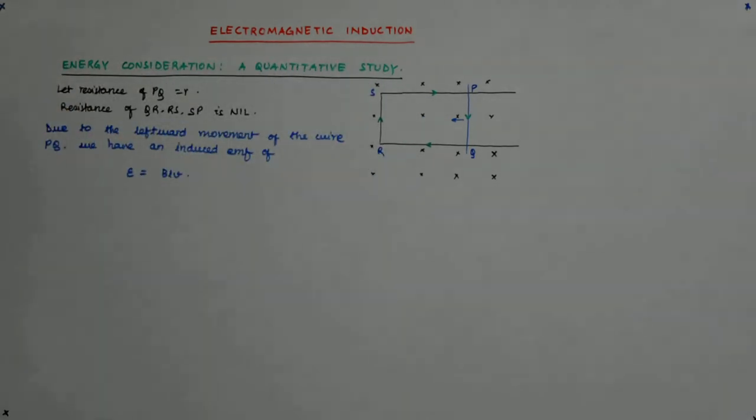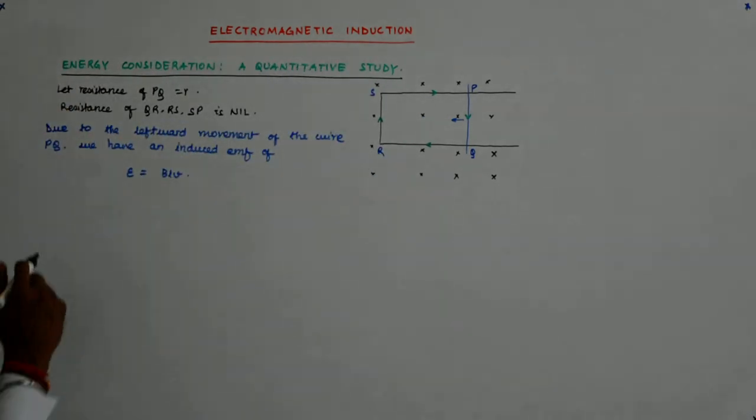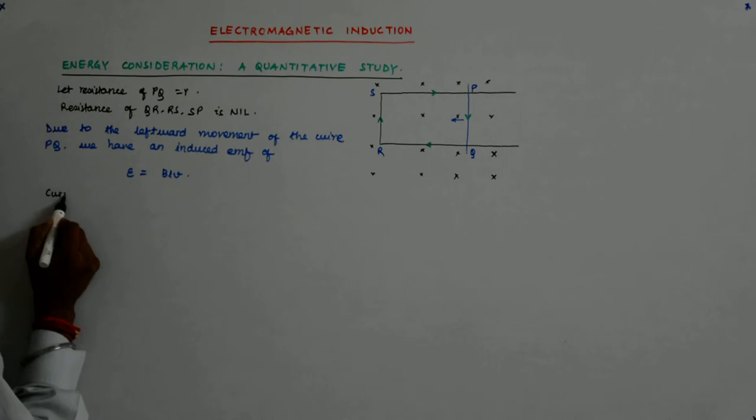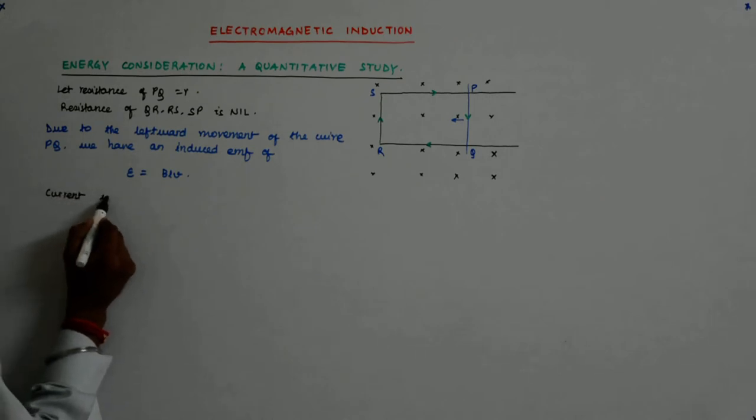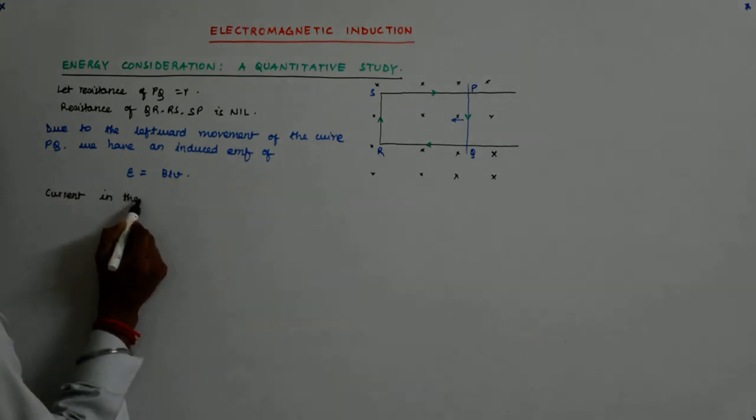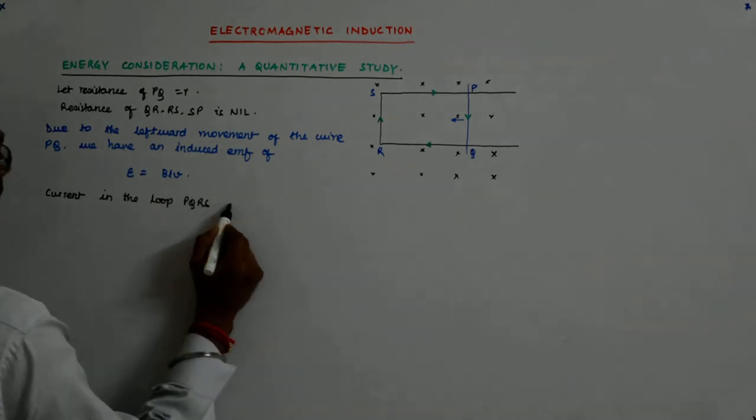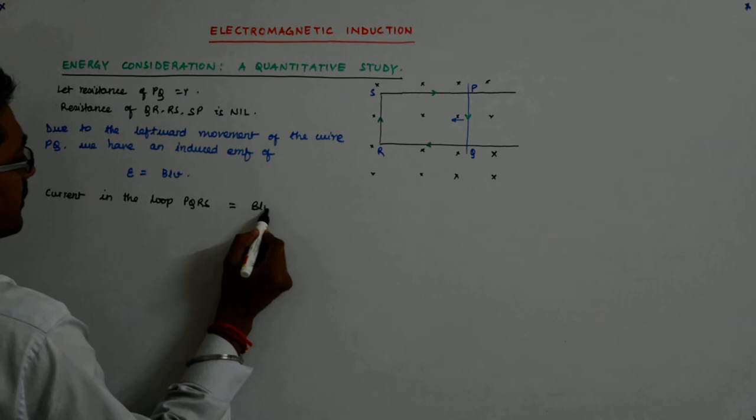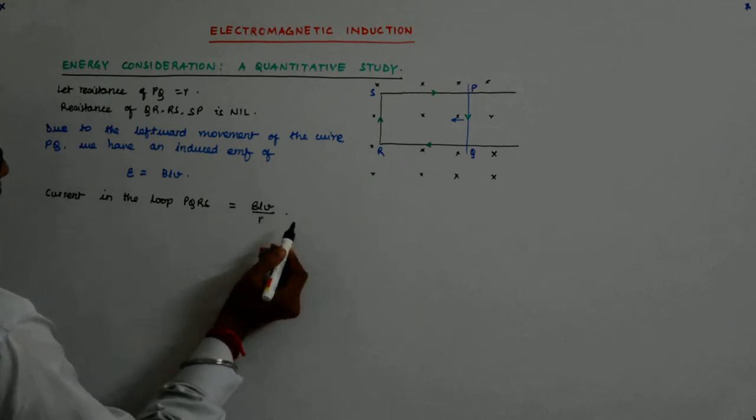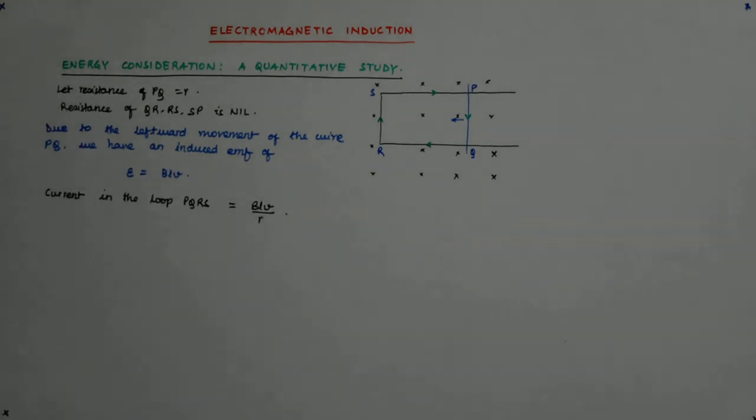Now, what is the current due to that? Therefore, current in the loop PQRS becomes BLV upon R is it not? That is BLV upon R.